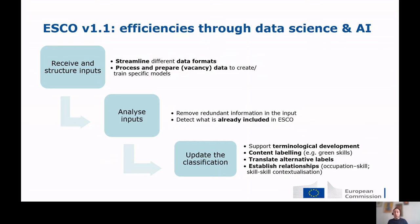Data science can support the removal of redundant information and in particular can support detecting what is already included in ESCO — what competencies are already part of the classification and what instead is missing and should be included. Data science has a strong role to play in updating the classification, for example by supporting terminological development using vacancy data to identify alternative labels and synonyms. It is used for content labeling, as we saw in the case of green skills. It has strong potential to support labeling of skills, is used for translations, and is used to establish relationships between occupations and skills and between broader and narrower skills, leading to skills contextualization. It is therefore very important to support human validation alongside data science techniques.